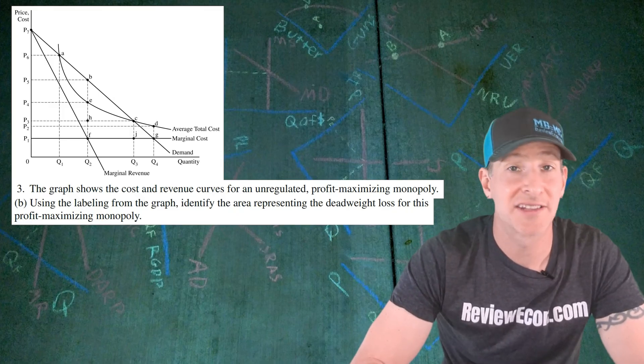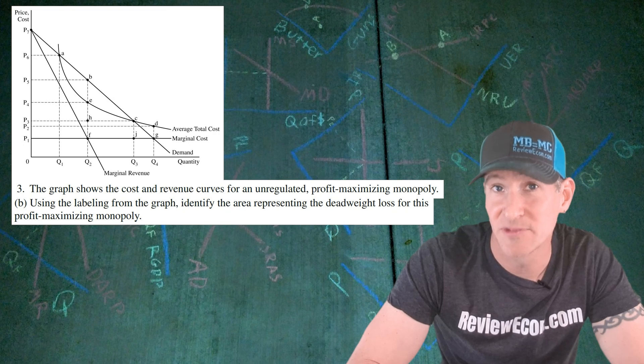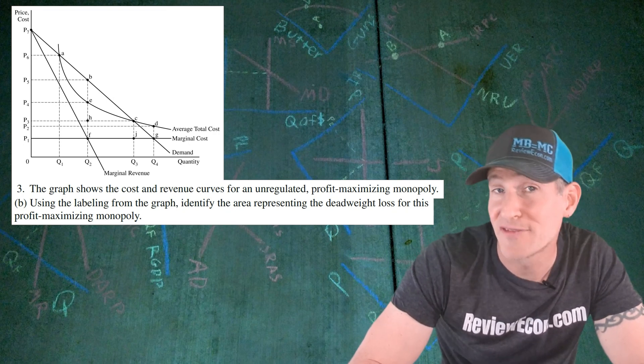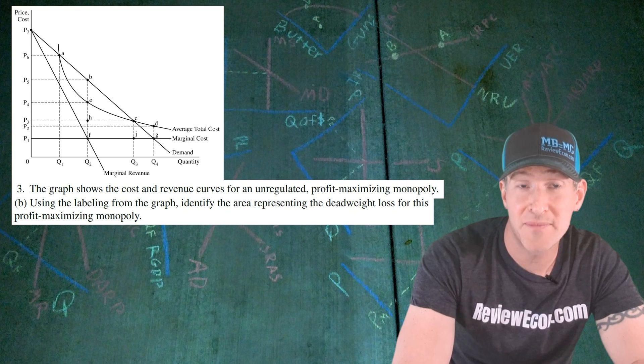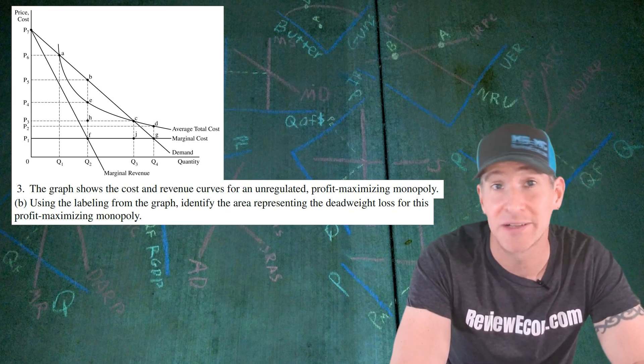For part B, we are asked to identify the deadweight loss on this graph using the labels we see. And of course, this is at the profit maximizing quantity because this is a profit maximizing firm. Now the profit maximizing quantity is Q2, where MR equals MC.